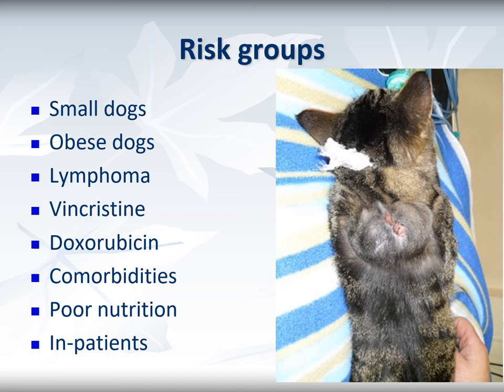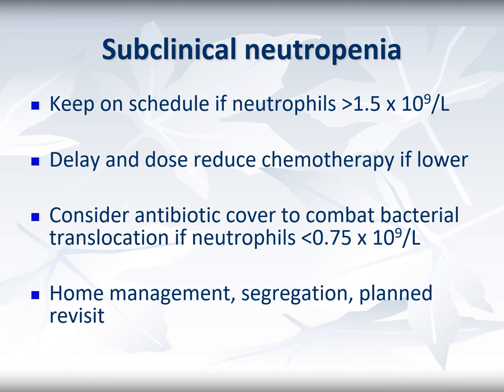The risk of significant complications like sepsis post-chemotherapy is greater in small and obese patients — due to the way drugs are calculated per meter squared — and is seen more in lymphoma patients, primarily with doxorubicin, though vincristine shows predisposition in some studies. Also at higher risk are patients with significant comorbidities, poor nutrition, and those who are inpatients. For subclinical neutropenia where the count is above 1.5 but below the reference range, the patient is monitored and may stay on schedule. With a lower neutrophil count a dose delay and reduction of the previous drug are needed. Some authors advocate prophylactic antibiotics such as trimethoprim-sulfadiazine, potentiated amoxicillin, or fluoroquinolones once the neutrophil count falls below 0.75.